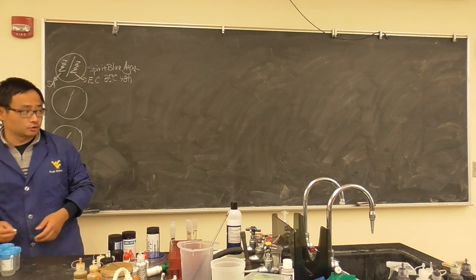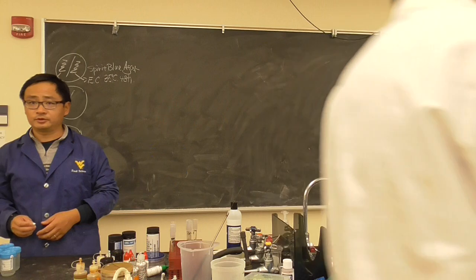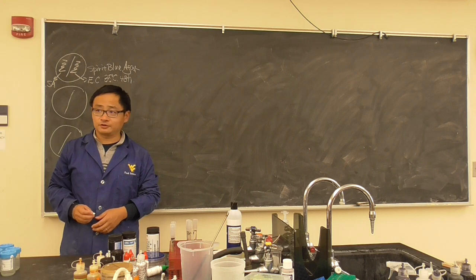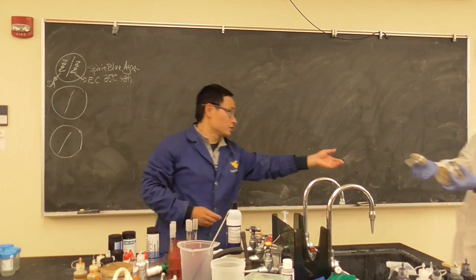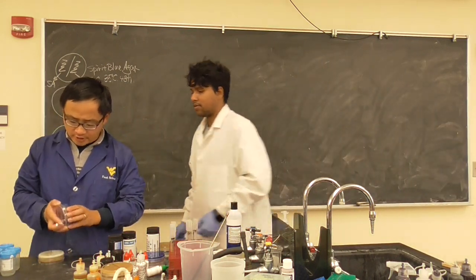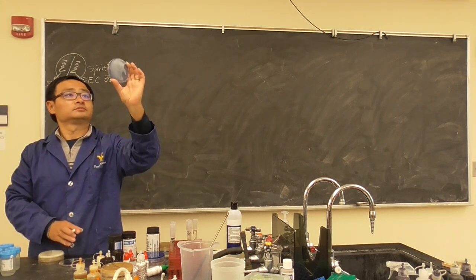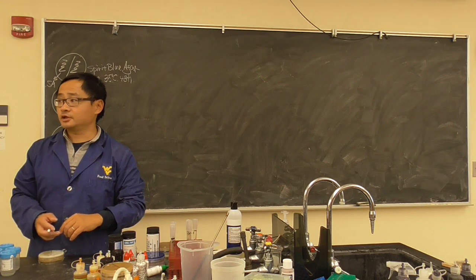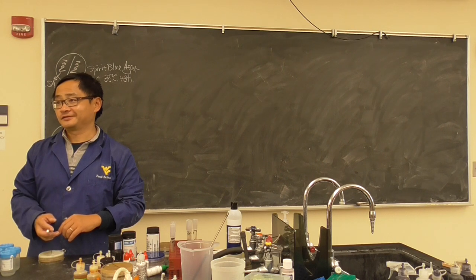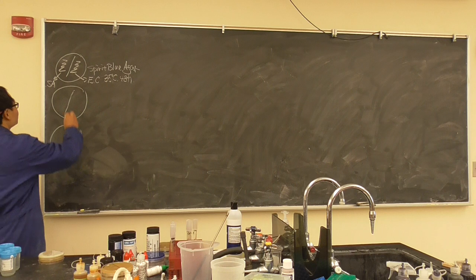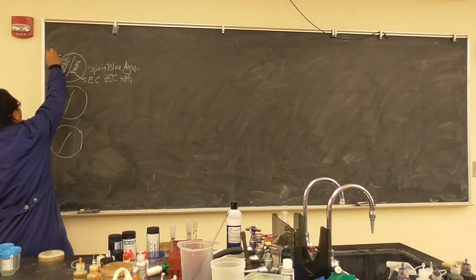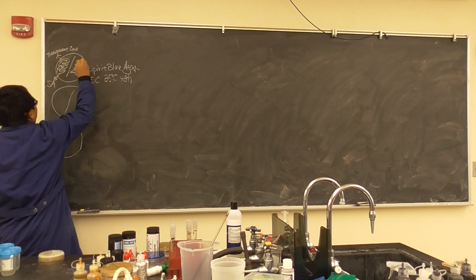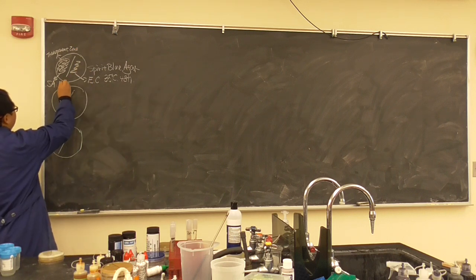Let me see some of the student samples. It seems like both sides look the same. So the results look like the Staphylococcus aureus side should have a transparent zone, and the E. coli side should not — because the spirit blue agar has lipase activity. So the transparent zone should be on the Staphylococcus aureus side.